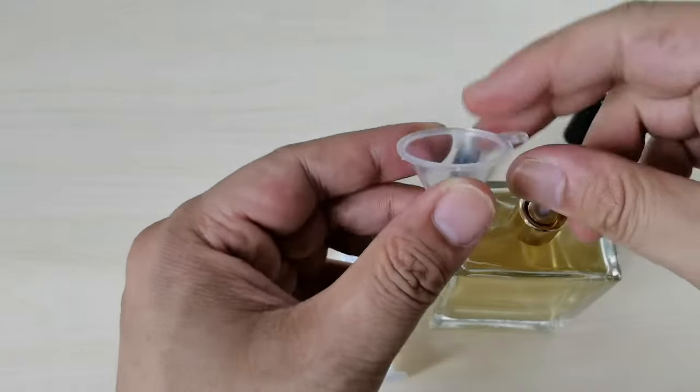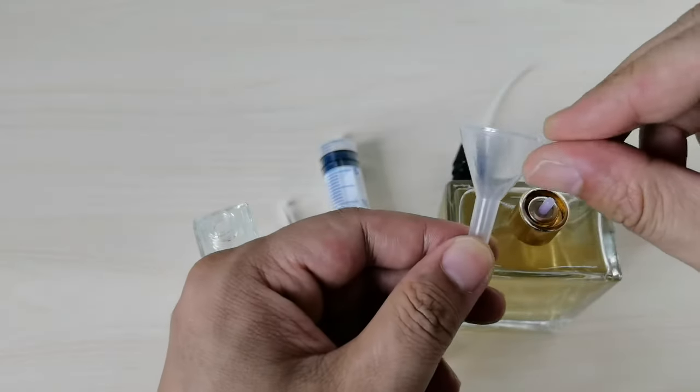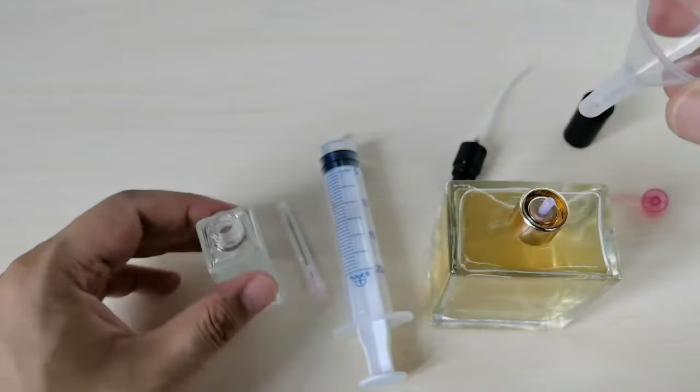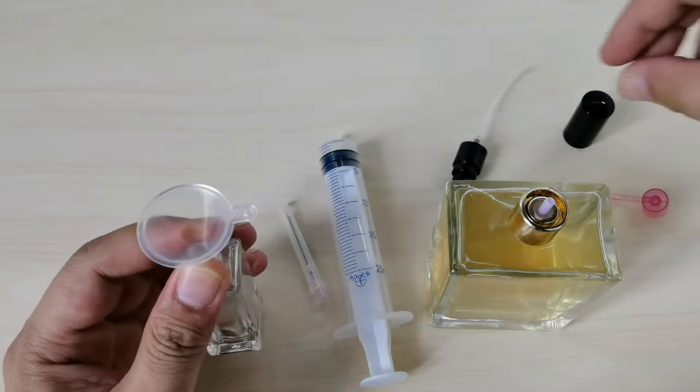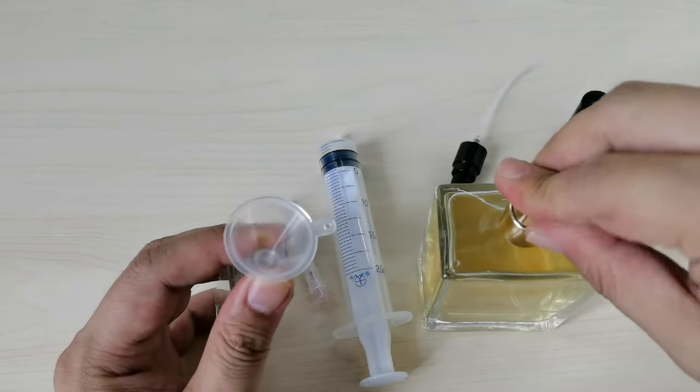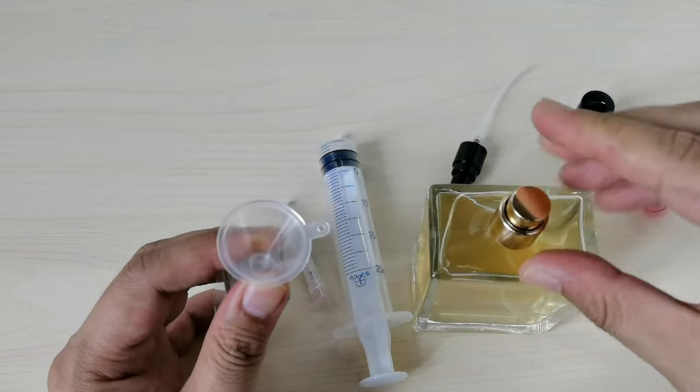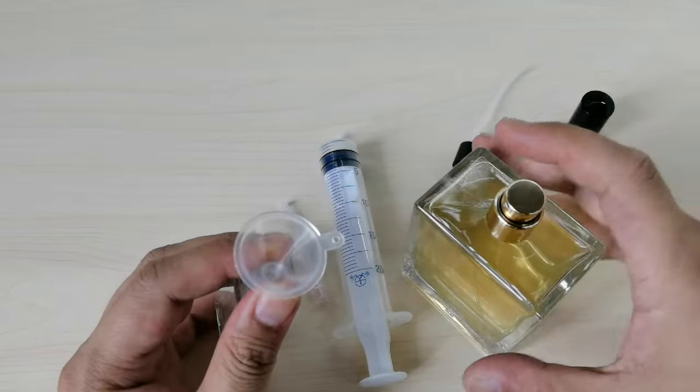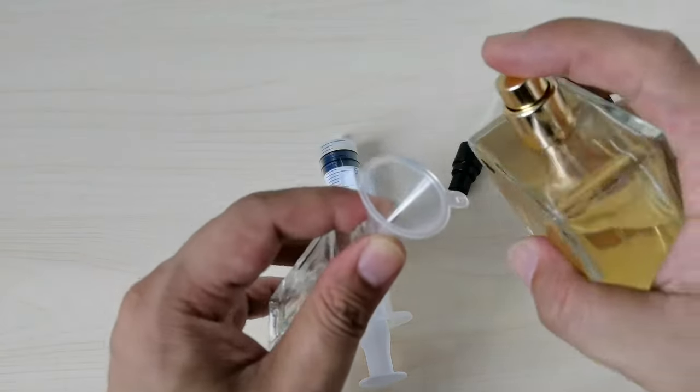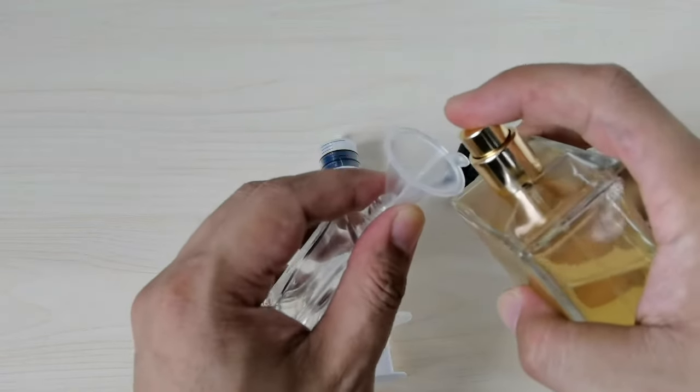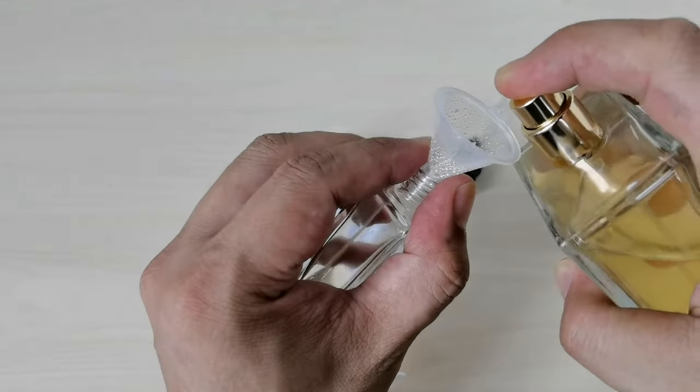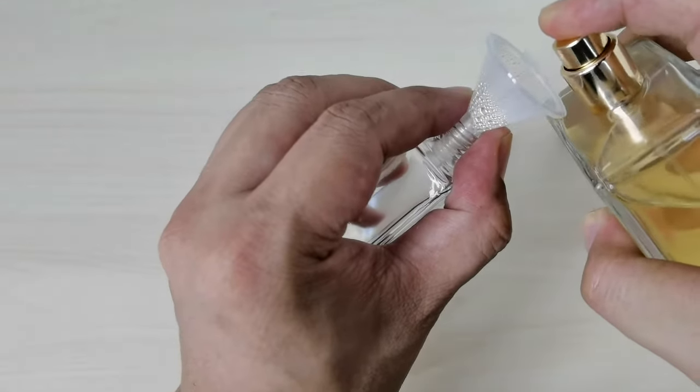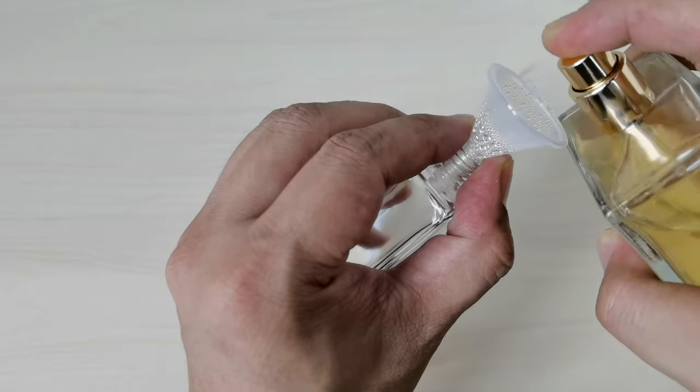Next one is this funnel. Put it on the bottle and just spray in the funnel. After many times it will get into the small bottle.